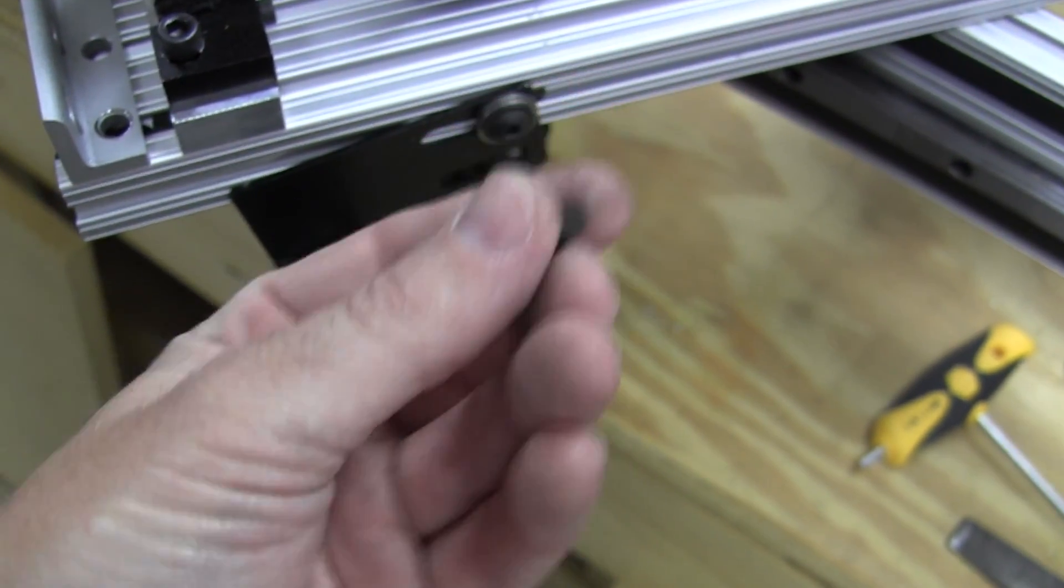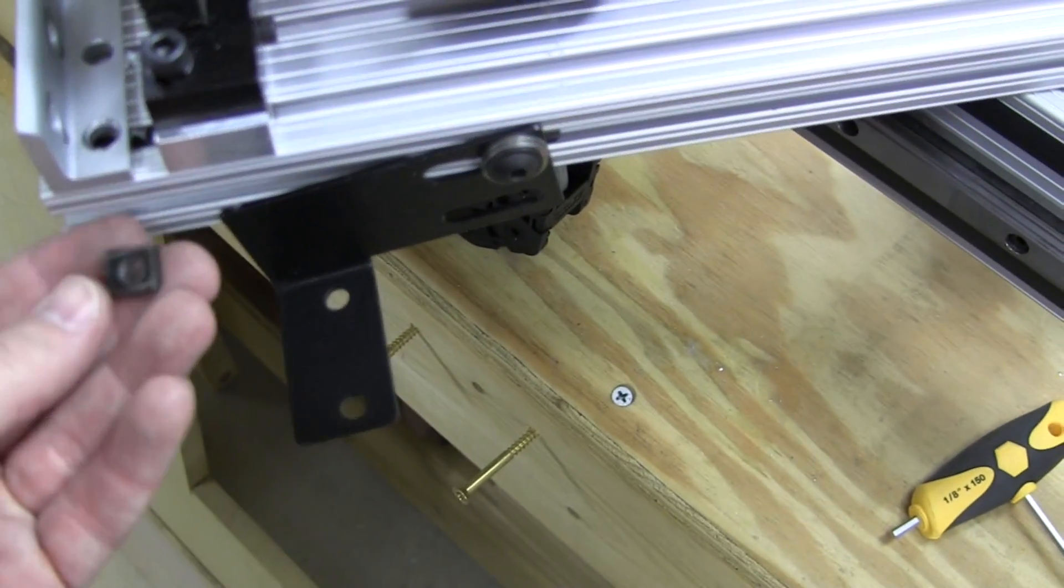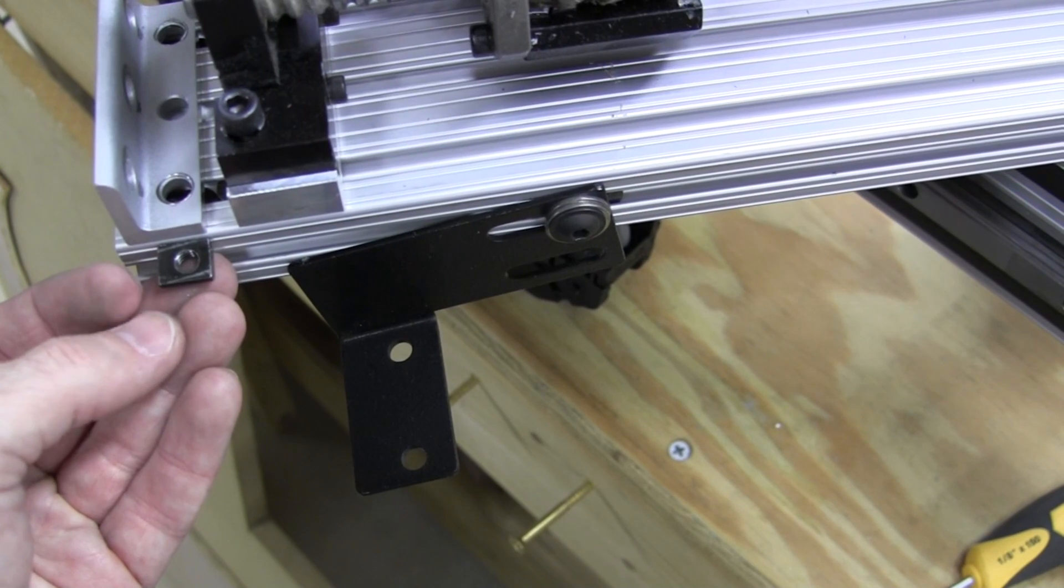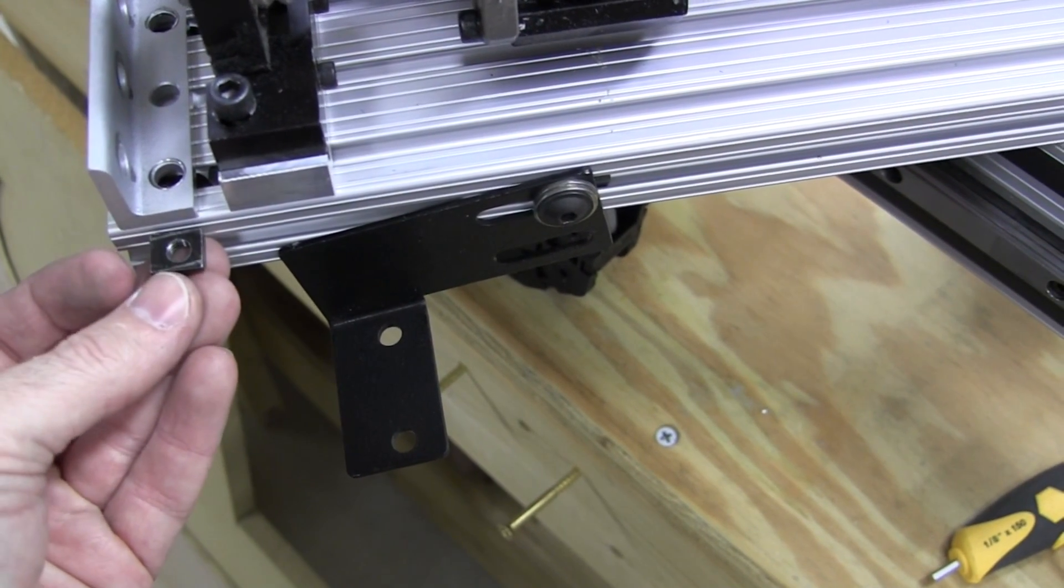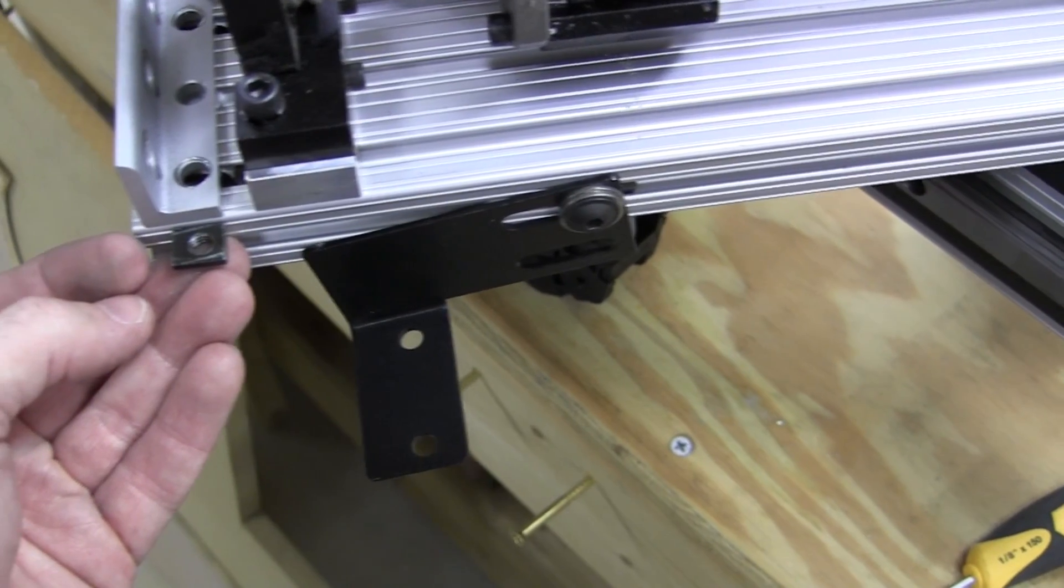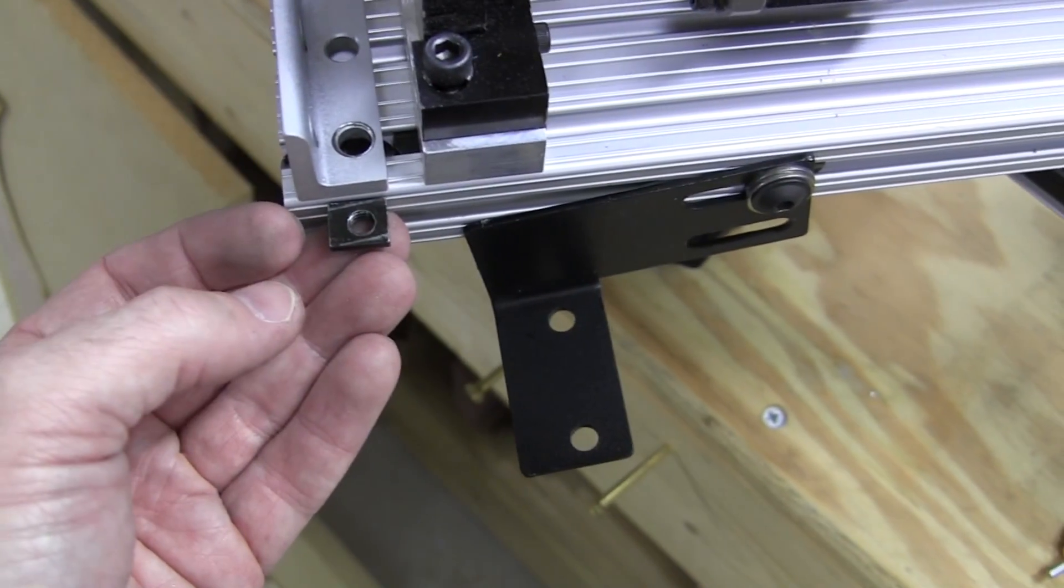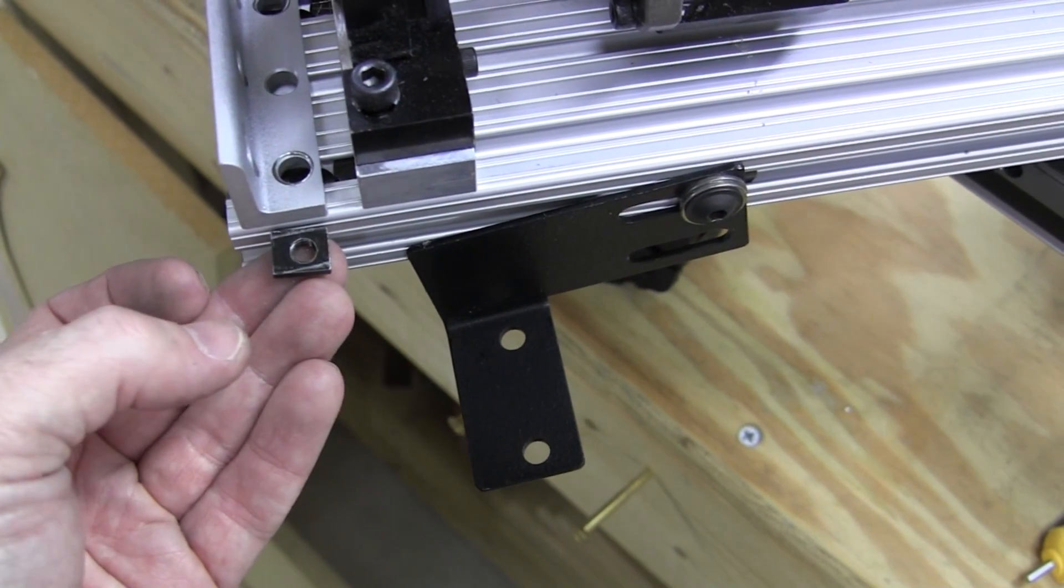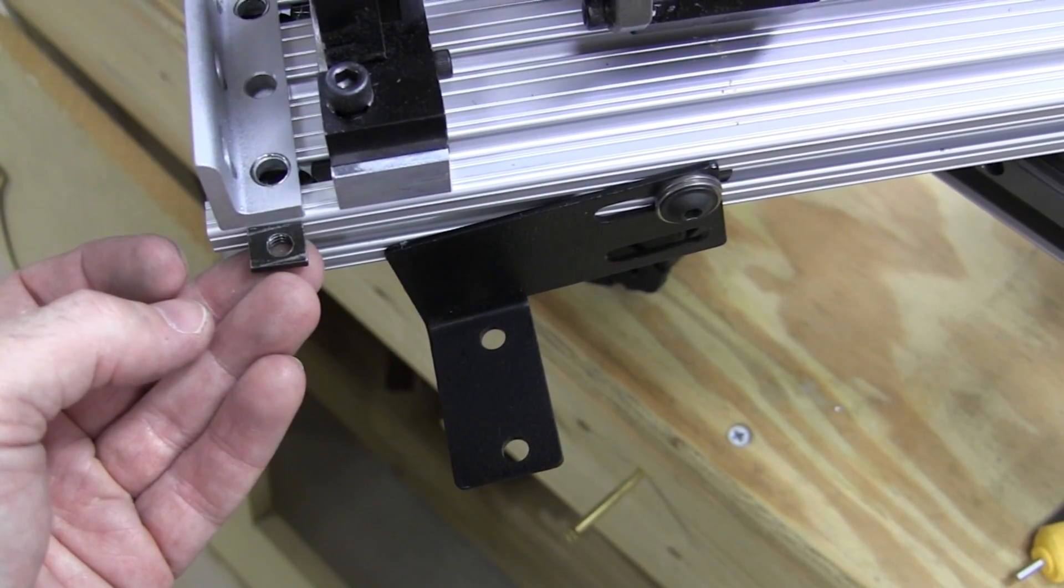That's a quarter-20 thread inside there, and luckily this lines up perfectly with the hole. You've got two different sides. This one happens to be offset, which works to my advantage. If I order some off eBay tomorrow they might be different, but if need be I can cut those down as well.